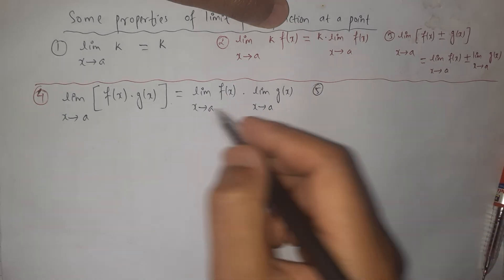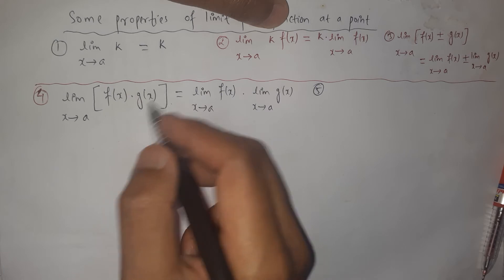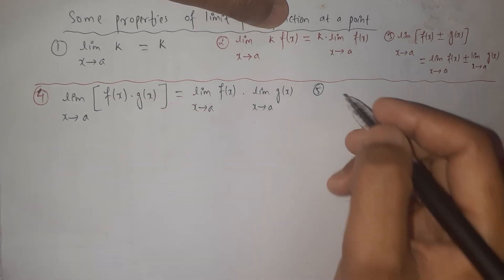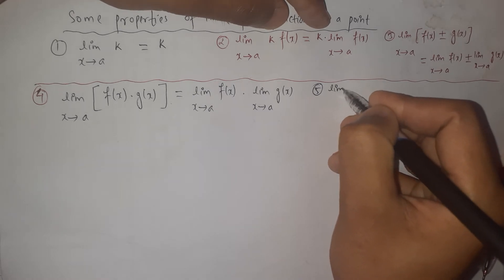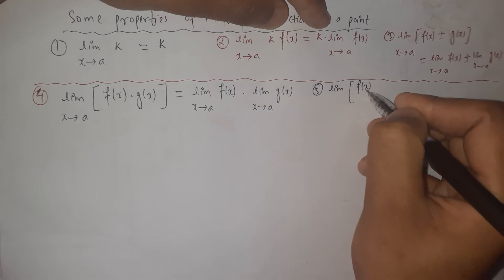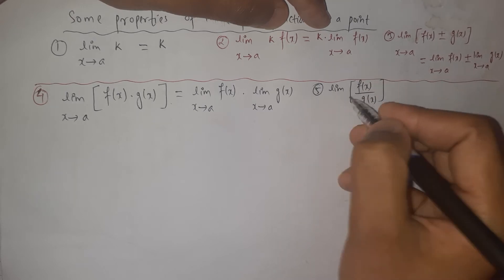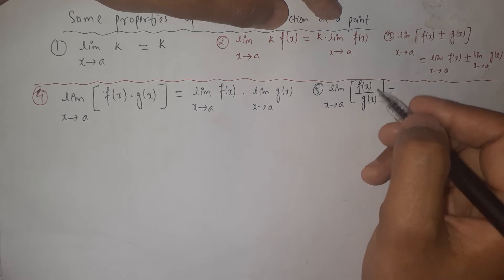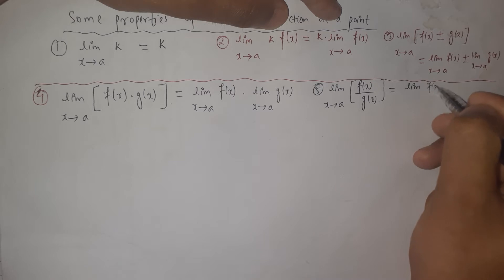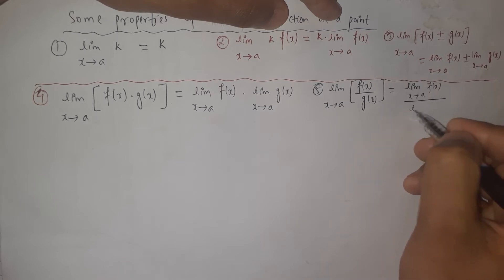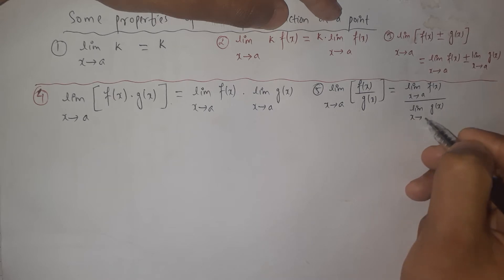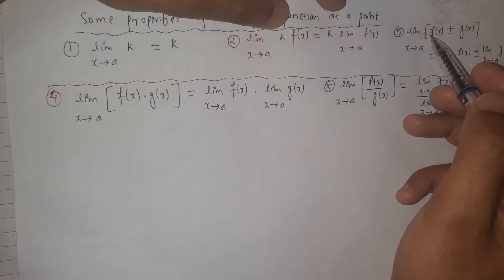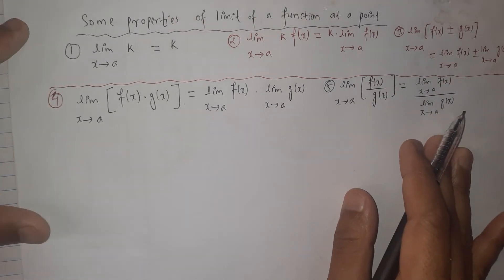Property five is the quotient law. The limit of F(x) over G(x) when X approaches to a is the same as the limit of F(x) when X approaches to a, divided by the limit of G(x) when X approaches to a. In addition, subtraction, multiplication, and division, the limit is distributed over each term.